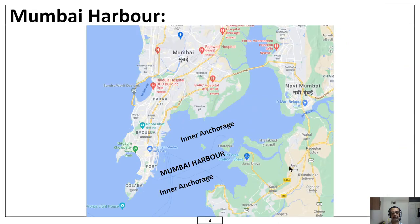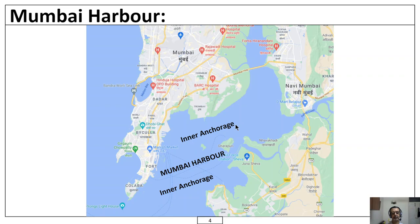What you see on this slide now is the actual harbour of Mumbai. Inside this harbour, you have got two distinct ports. One is here — the port of Mumbai, which is controlled by the Mumbai Port Trust. And there is another port over here, the Navasheva Port, which is controlled by the Jawaharlal Nehru Port Trust, in short also called JNPT. This Mumbai Harbour has got an inner anchorage, which gives protection to ships, big and small, against bad weather and strong currents.